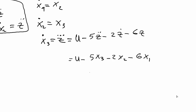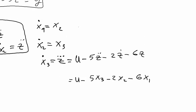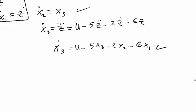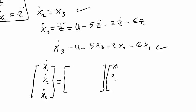Now we have these three differential equations. We need to make this: [x1 dot, x2 dot, x3 dot] equal to a matrix times the vector [x1, x2, x3] plus a 3 by 1 vector times u, the input.